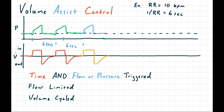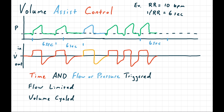One other detail: traditionally there is no restriction on how soon after one breath finishes the next can be triggered by the patient. This puts you at a theoretically high risk of auto-PEEP or breath stacking. To prevent this, ventilators have a built-in lockout window in assist mode. In addition to the six-second time trigger, the ventilator has a lockout window time within which the patient can't trigger another breath — often called a window parameter. After any breath, there's a lockout period, then a window during which the patient can trigger a breath, then a time limit after which the ventilator triggers a control breath on its own.